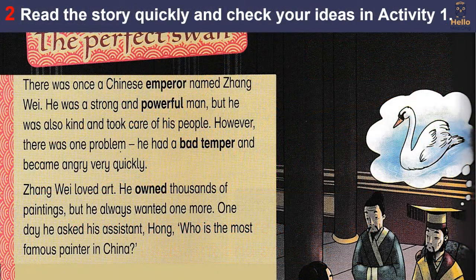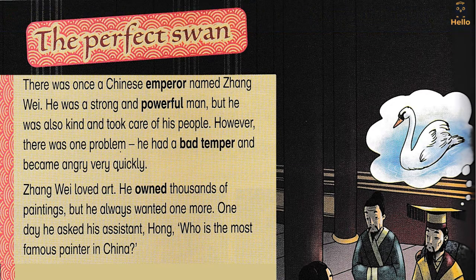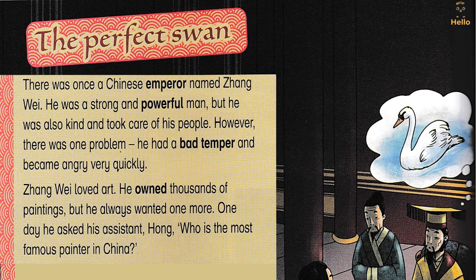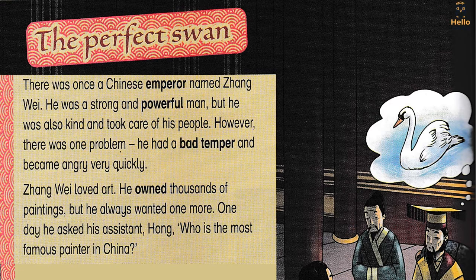Activity 2: read the story quickly and check your ideas in Activity 1. The Perfect Swan. There was once a Chinese emperor named Zhang Wei. He was a strong and powerful man, but he was also kind and took care of his people. However, there was one problem: he had a bad temper and became angry very quickly.